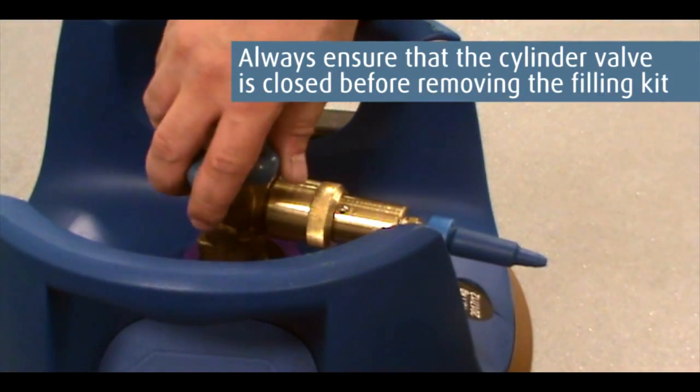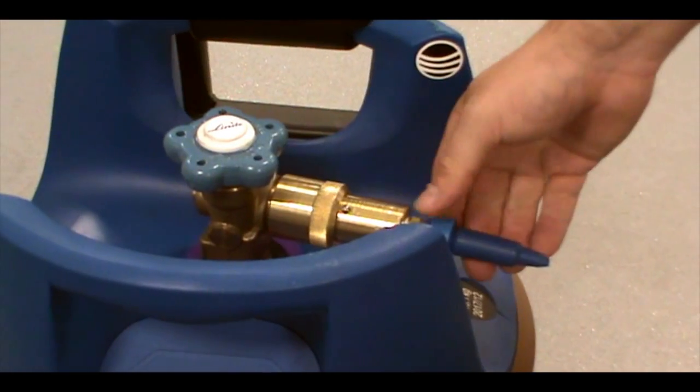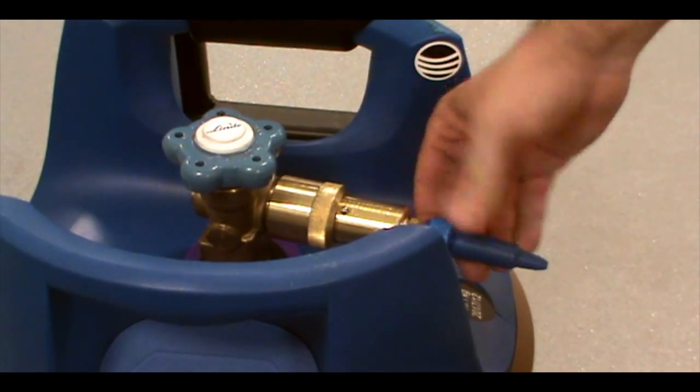When finished, ensure you close the hand wheel valve clockwise and release the remaining gas from the kit. You can now unscrew the filling kit.